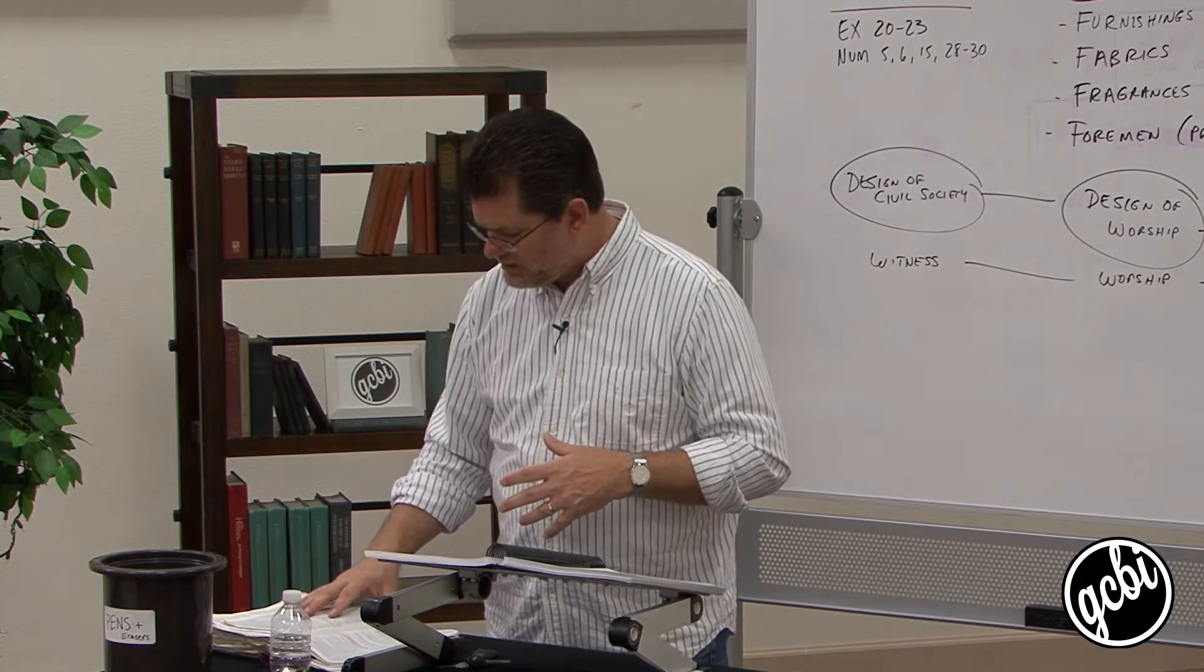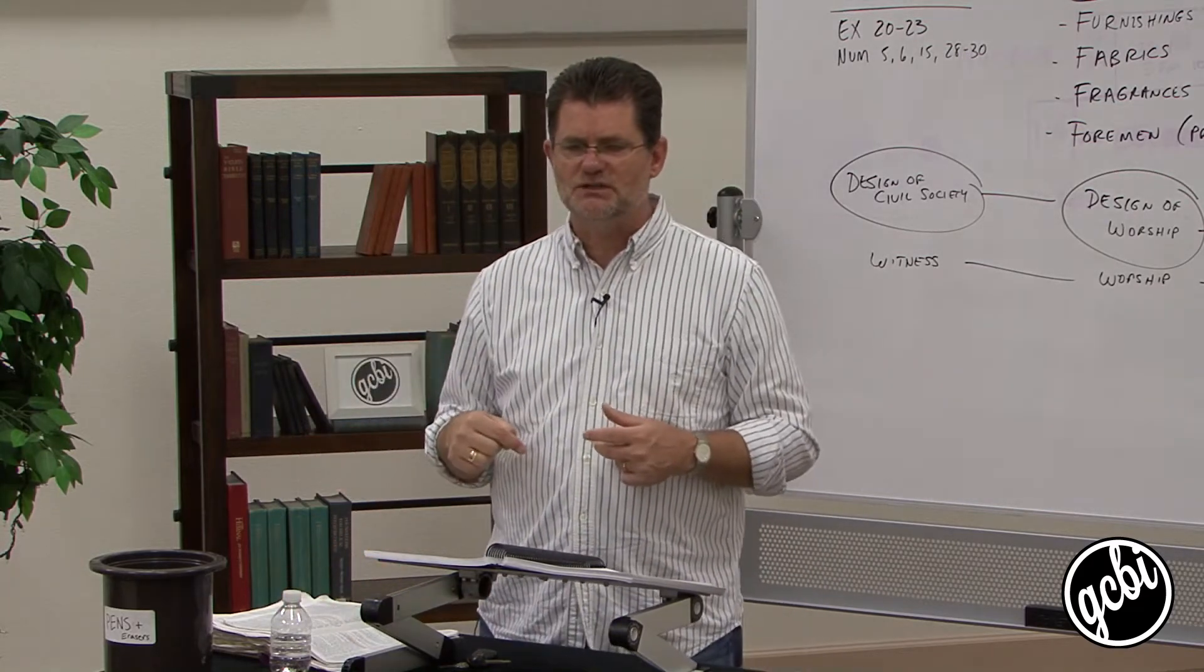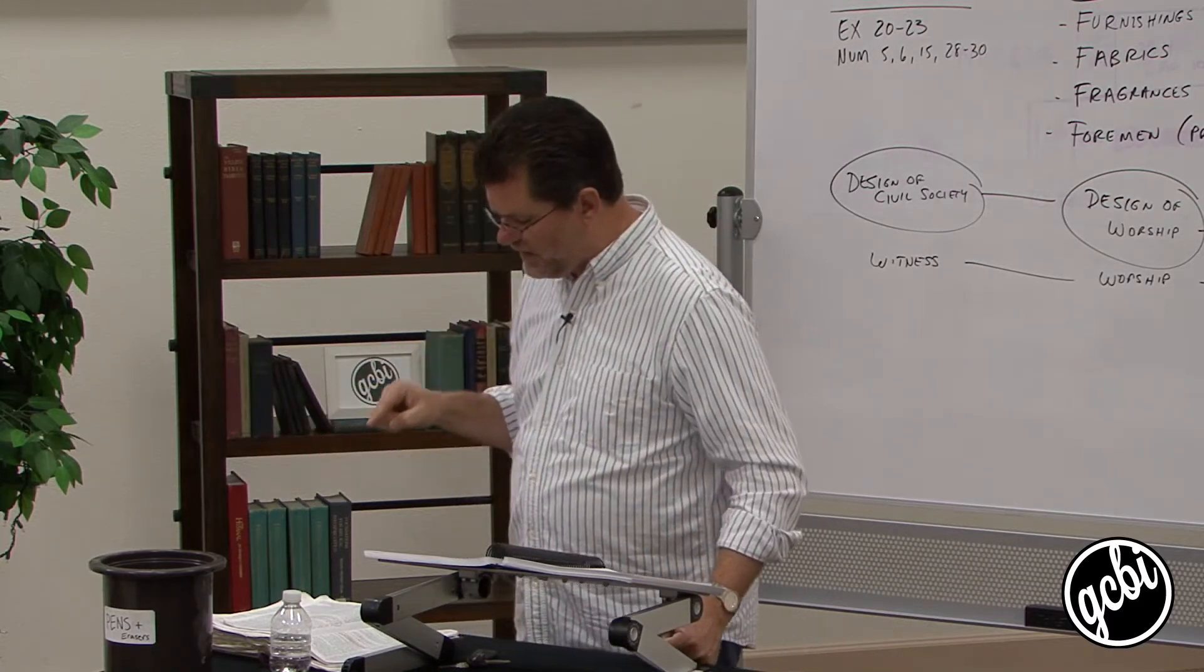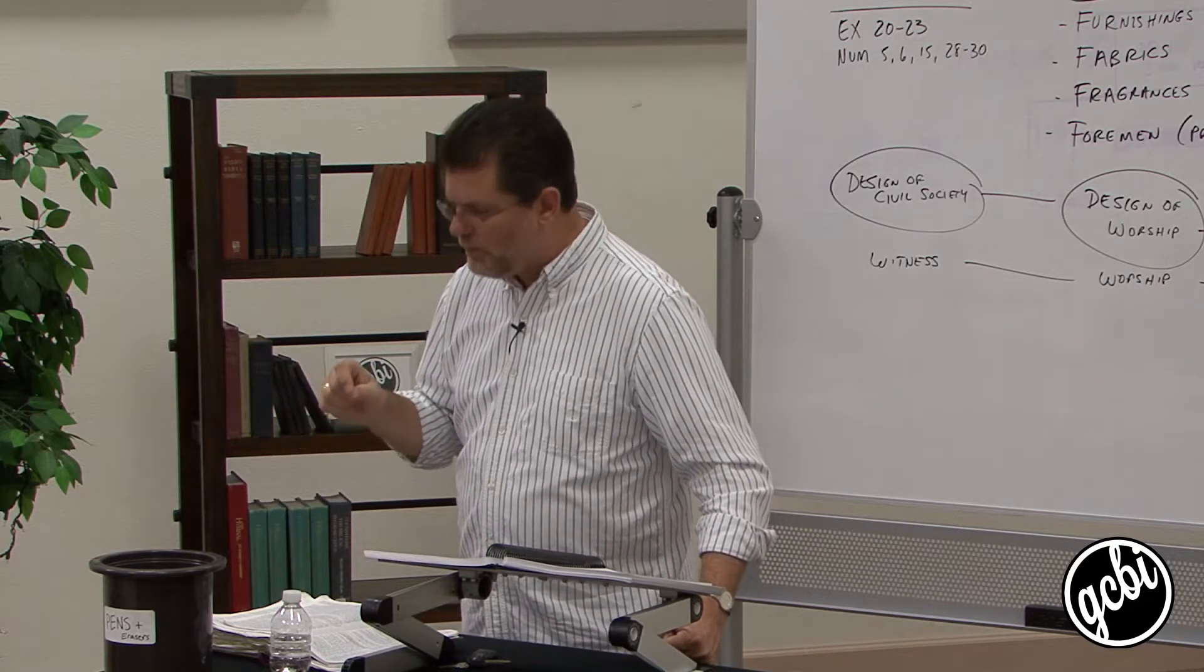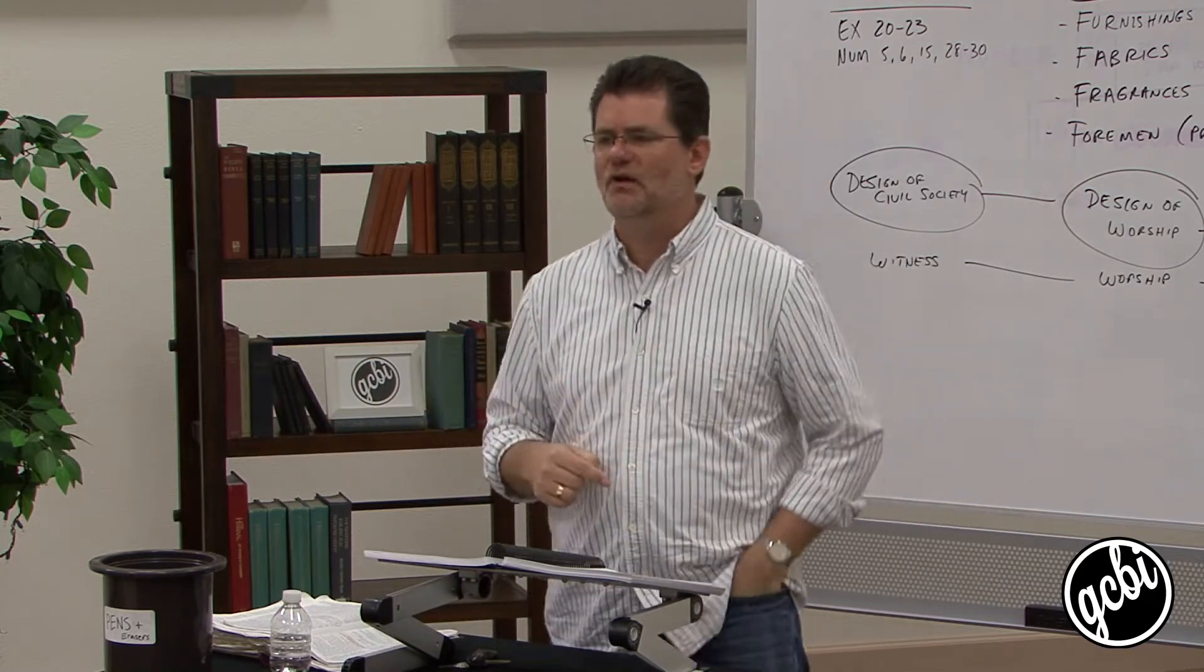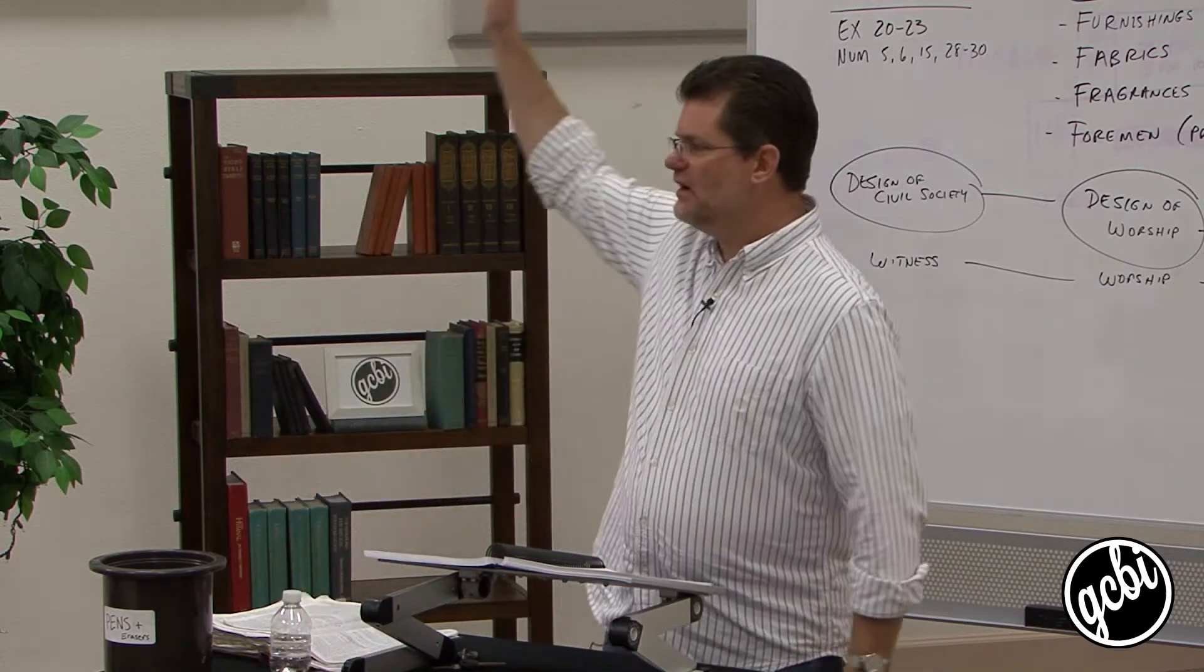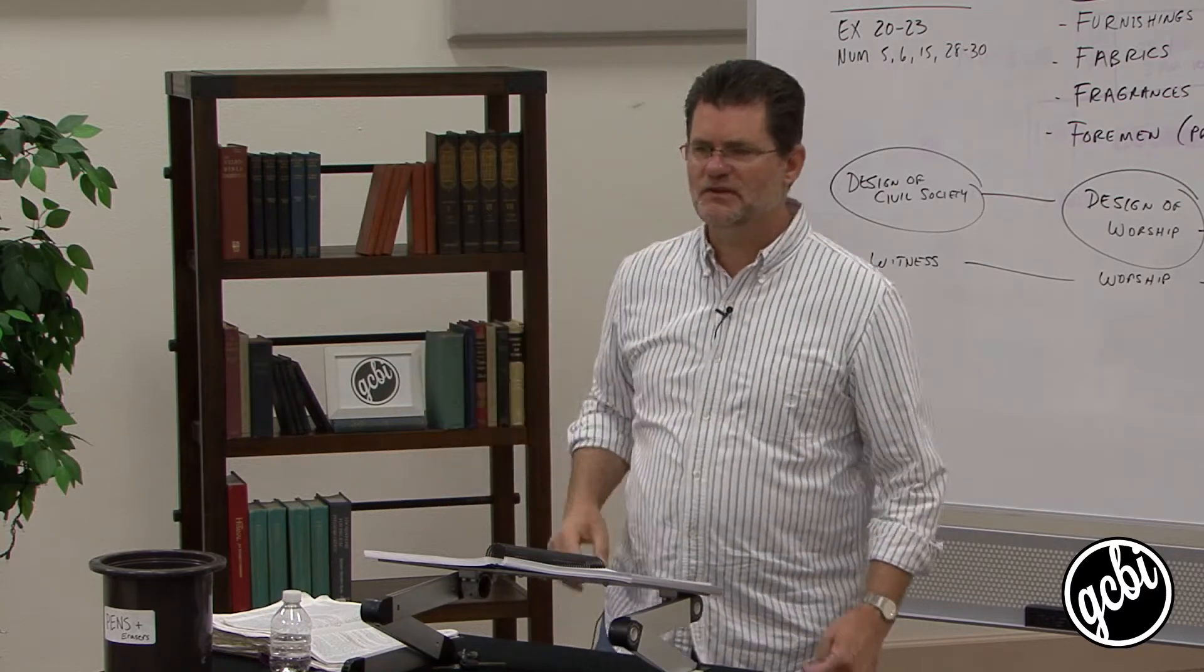If you drop down to verses 9 through 11, what happened when they did this? They obeyed. They got there and set up 12 pillars. By the way, put a box around verse 7 in chapter 24.